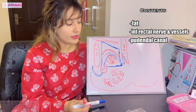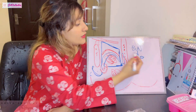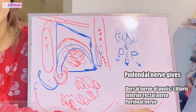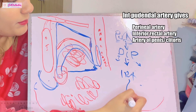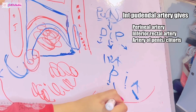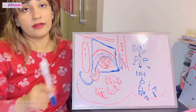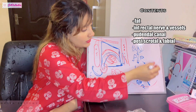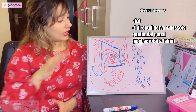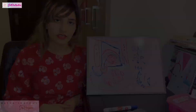The contents we know so far: fat, inferior rectal nerve and vessels, and the pudendal canal itself. For a mnemonic: the pudendal nerve gives the dorsal nerve of the penis, the inferior rectal nerve, and the perineal nerve. The internal pudendal artery gives the inferior rectal artery, the perineal artery, and the artery of the penis or clitoris. The perineal artery gives the posterior scrotal and posterior labial vessels. Other contents include the perineal branch of the S4 nerve and some perforating cutaneous branches.